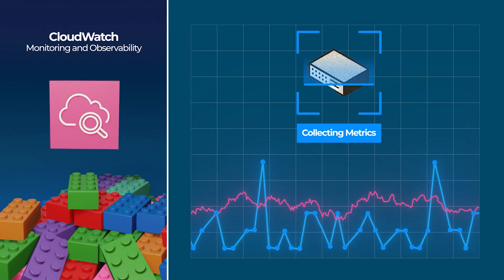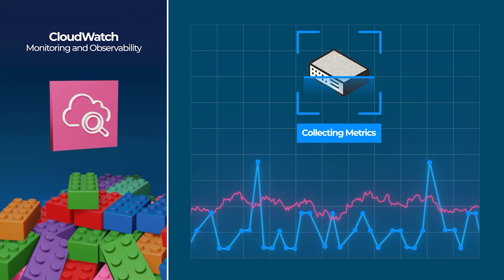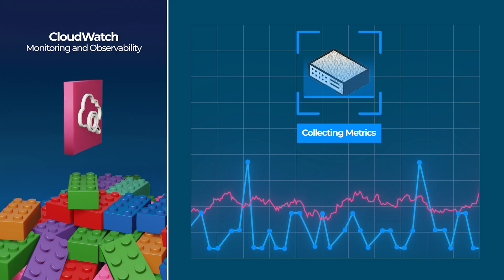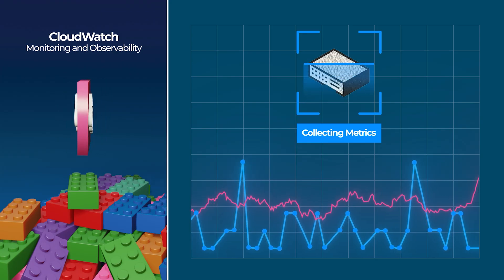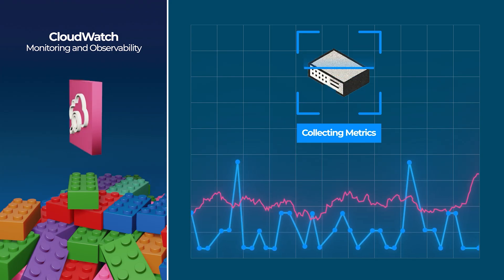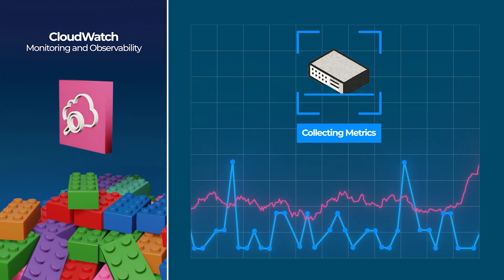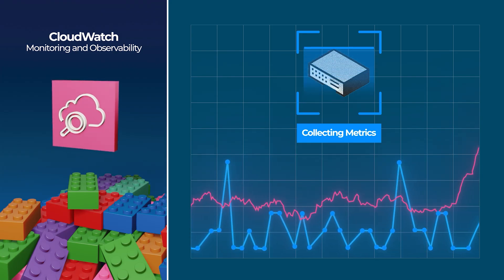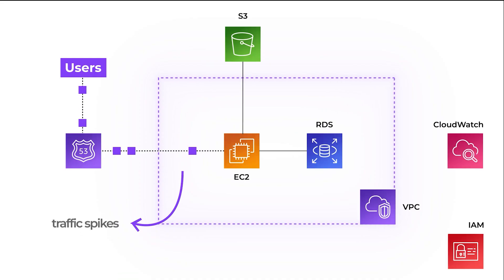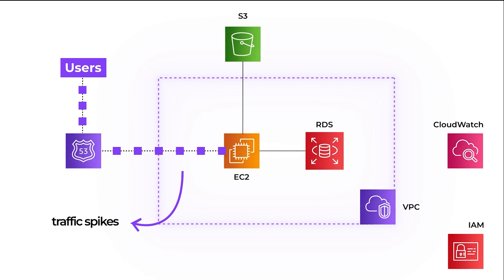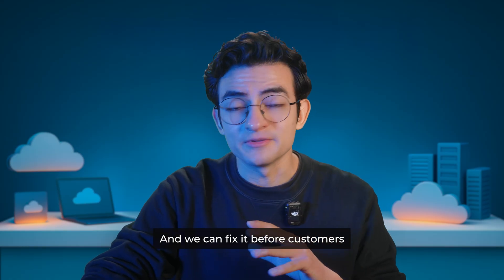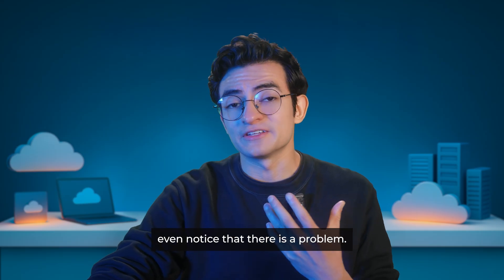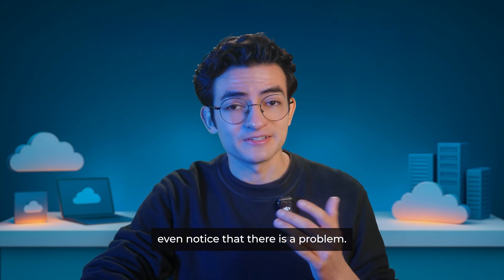That's AWS CloudWatch service. It watches performance, collects logs, and sends alerts if anything breaks or slows down — stuff like traffic spikes, errors, or our database getting overloaded. We will know right away and can fix it before customers even notice there is a problem.